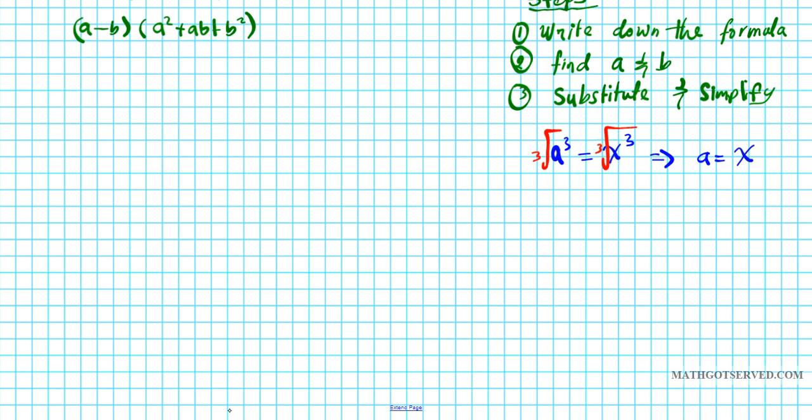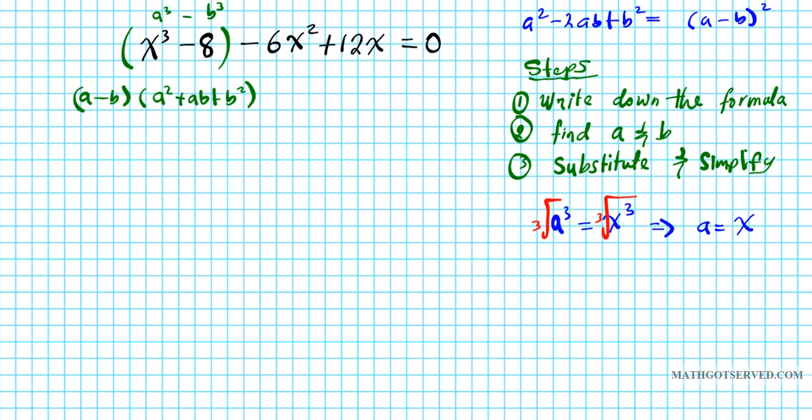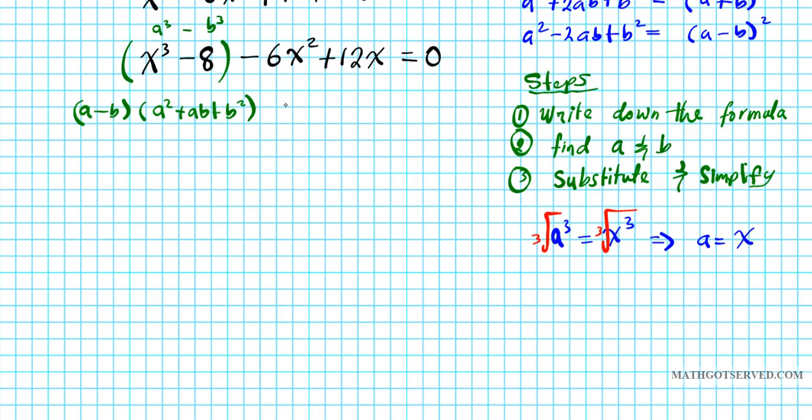Now let's shift our attention to the determination of the B value. B³, the second term in the formula is equivalent to 8 in the expression to be factored. So we have B³ = 8 and to isolate B here, take a cube root again. Cube root of both sides, and this clearly tells us that B is 2 because 2 to the third power is 8.